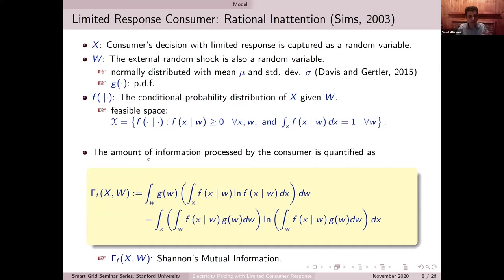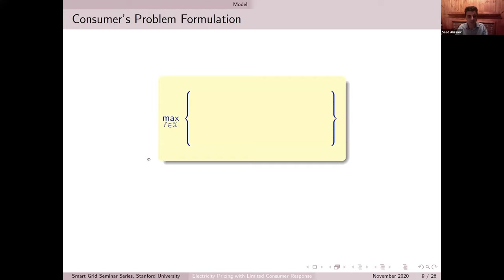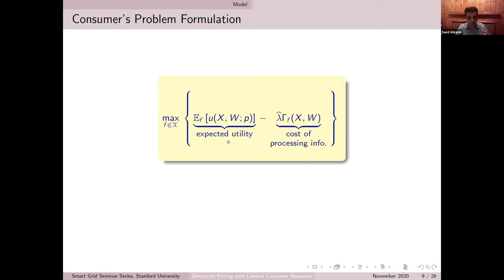I can recast the consumer's decision problem as maximization over this conditional distribution. A typical consumer would try to maximize her expected utility minus some cost of processing information. This term is added to the consumer problem to capture that cognitive limitation — to capture the fact that we are not willing to always re-optimize our thermostat setting or re-optimize our consumption decision as our ambient environment changes or if there is a new shock to our demand pattern. This is exactly the core — this is what is going to make the difference.